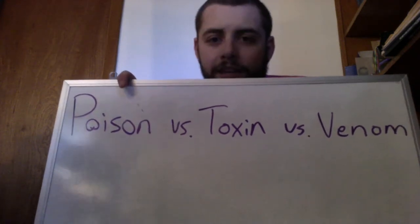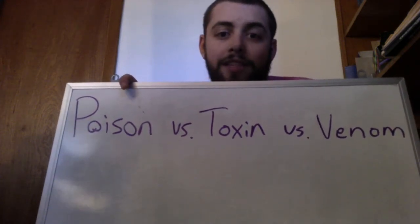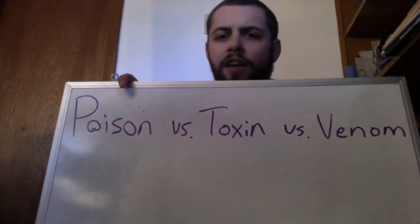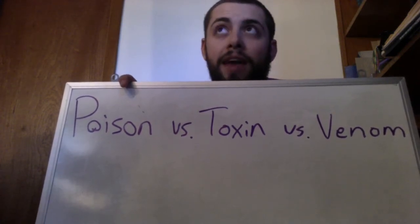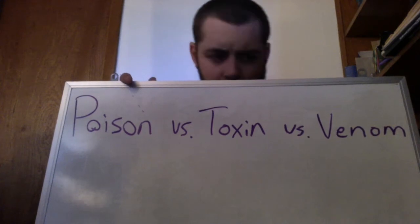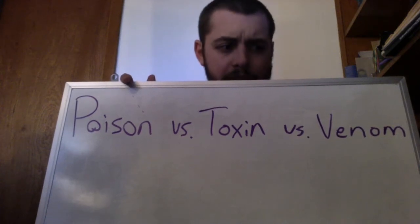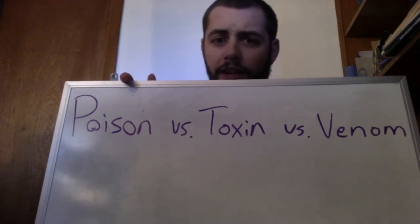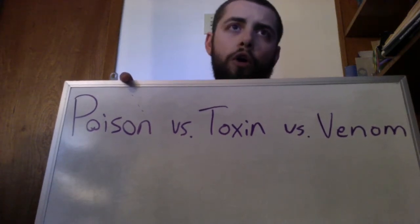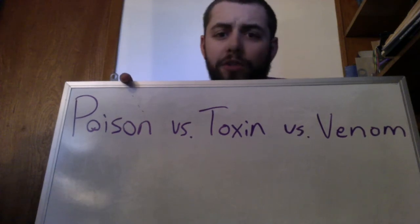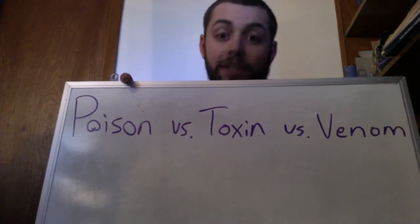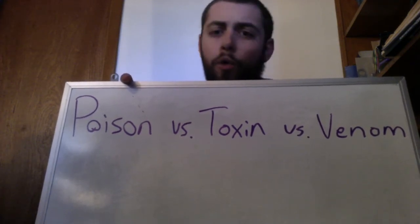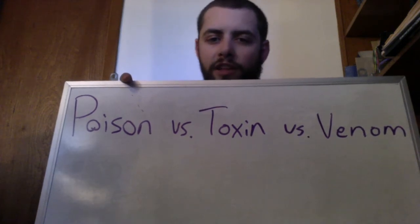A poison is a substance that is not naturally occurring — maybe it's man-made. A poison would be something like a cyanide pill, or something that you would use to assassinate someone with. It's not something that the organism produces naturally.